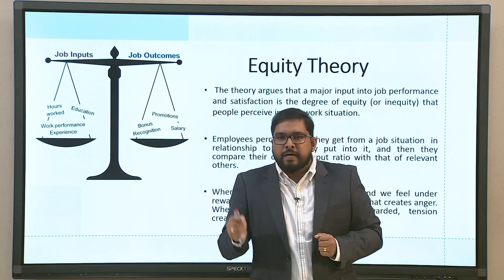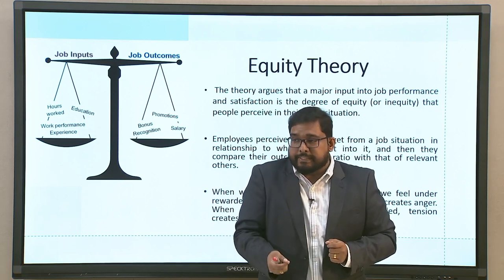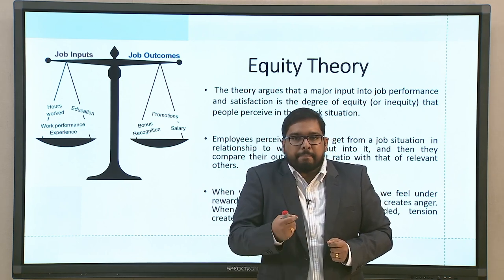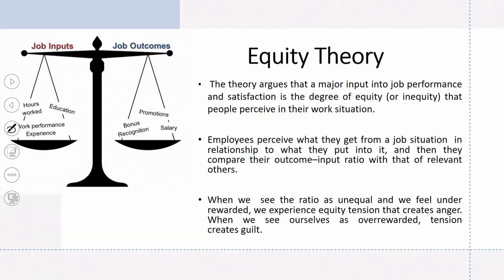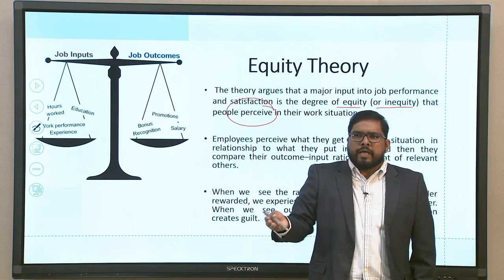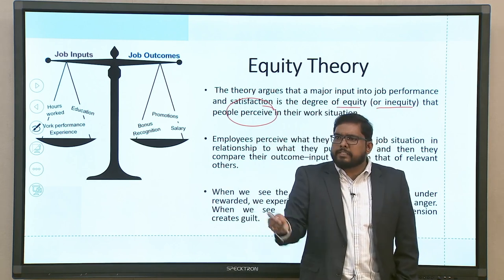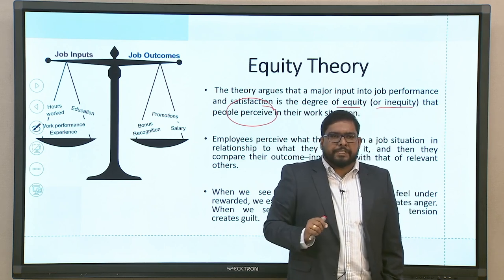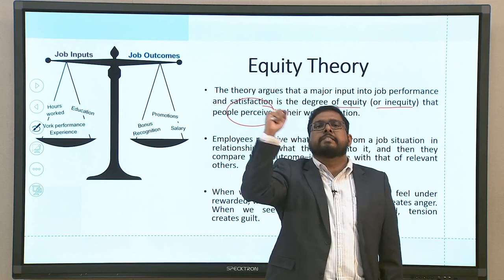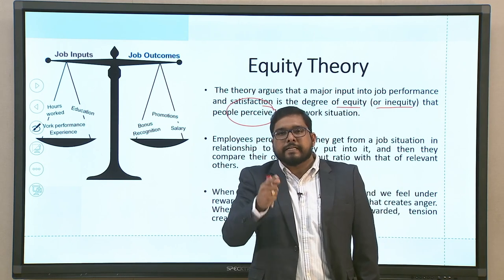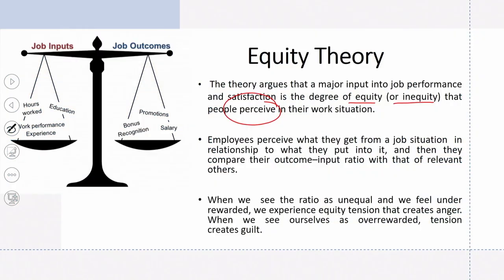The theory argues that a major input into job performance and satisfaction is the degree of equity, or iniquity, that people perceive in their particular work situation. It is not only equity but also iniquity that people perceive. You might feel there is a lack of equity — but it is specific to your perception. A co-worker might say the effort you are putting in is less, that's why you're not getting results. But as a person you perceive that you are giving your 100%, yet not getting the desired output. This is where iniquity comes in.